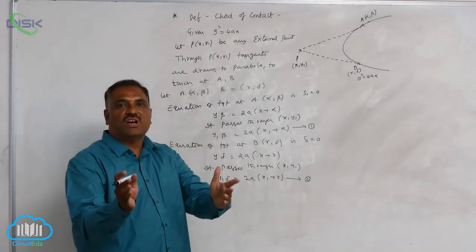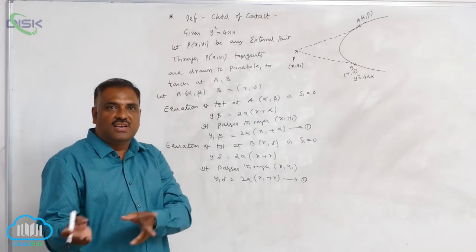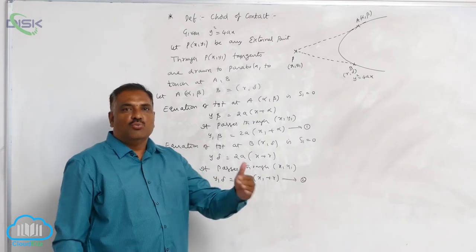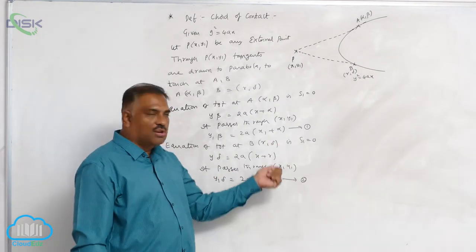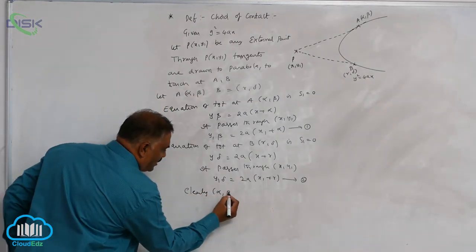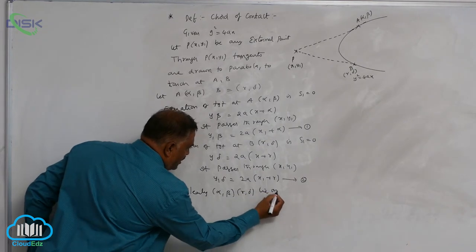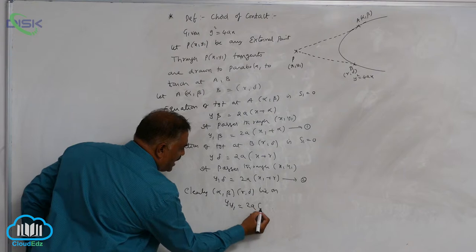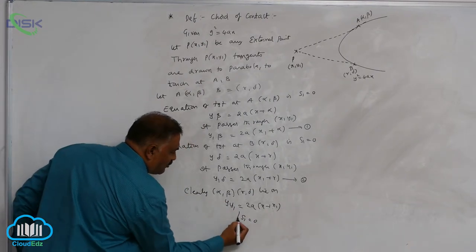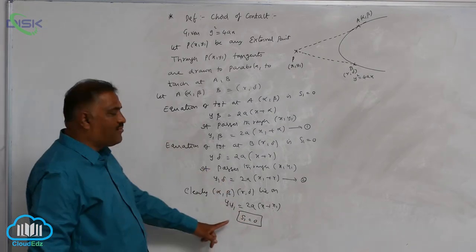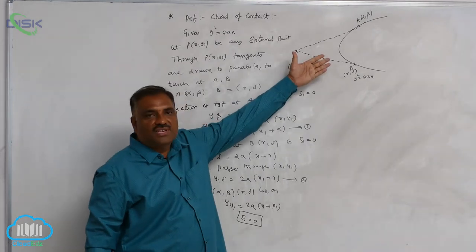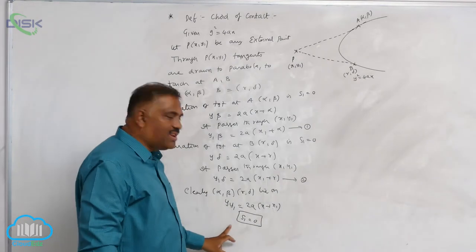That means the position of α, β is replaced by γ, δ, so we replace them by general coordinates. Clearly, α, β, γ, δ all lie on the line yy1 = 2a(x + x1), which is nothing but S1 = 0. So the equation of the chord of contact of point P(x1, y1) to the parabola y² = 4ax is S1 = 0.